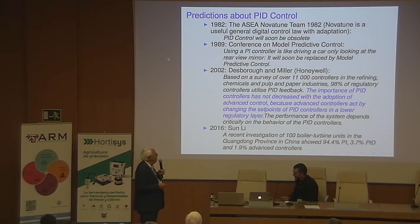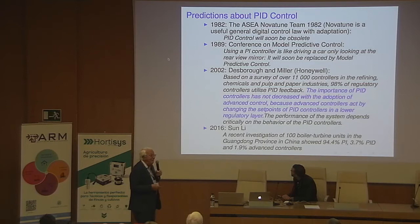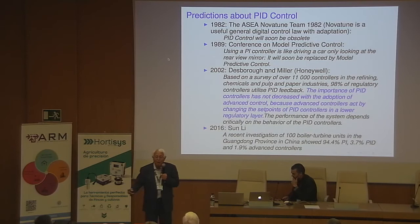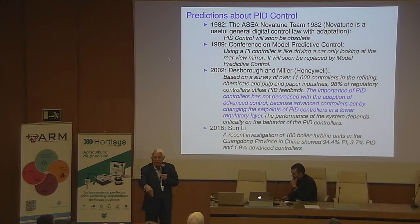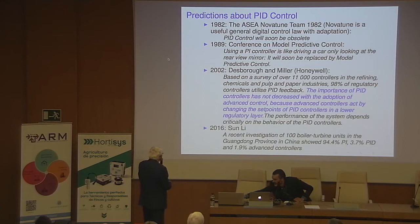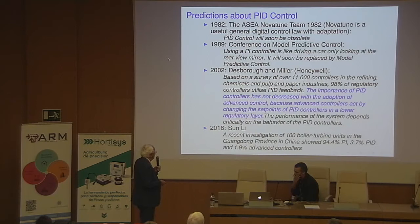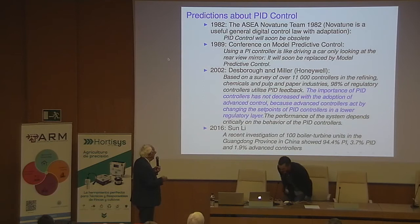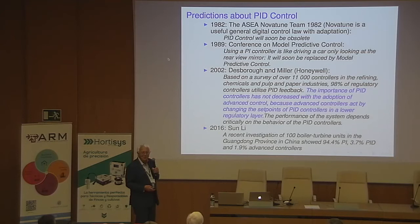Then we look at reality. In 2002, a team from Honeywell investigated 11,000 controllers and found that 98 percent of them were PID, and only 2 percent were advanced control such as MPC. They also said PID controllers will always be used because even advanced controllers don't adjust valves directly — they adjust set points of PID controllers. A 2016 Chinese investigation of 100 boiler turbine units found 94.4% PI and 3.7% PID, again totaling 98% combined, with only 1.2% advanced controllers.